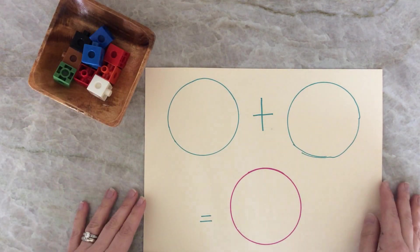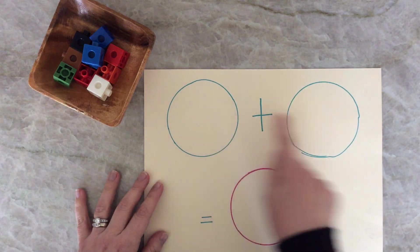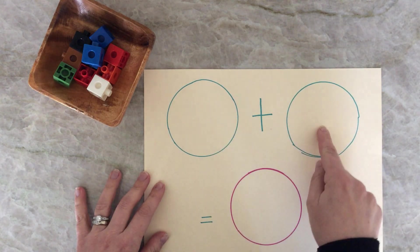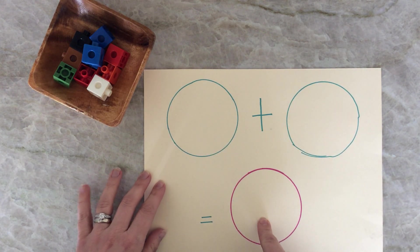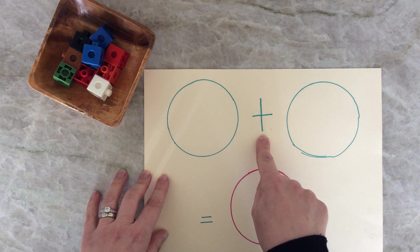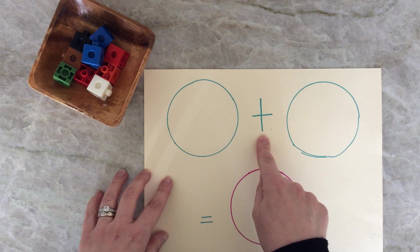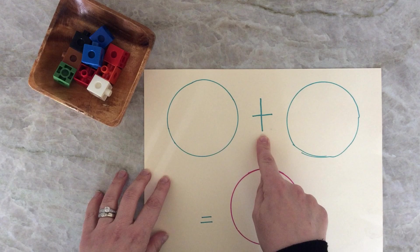Today I want to show you a worksheet that I made, a mat, and I have two circles on top that are green and one circle on the bottom that's purple. I made them different colors to show you something. There is this symbol in the middle. That symbol is a plus sign and we use it for addition.